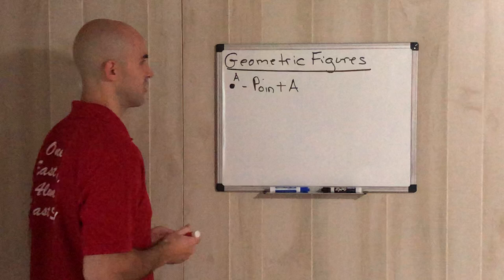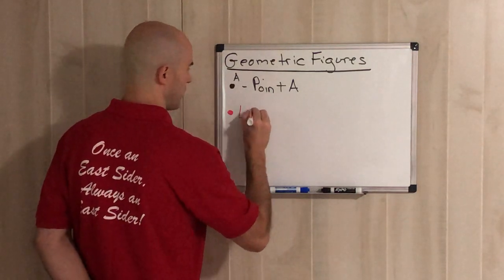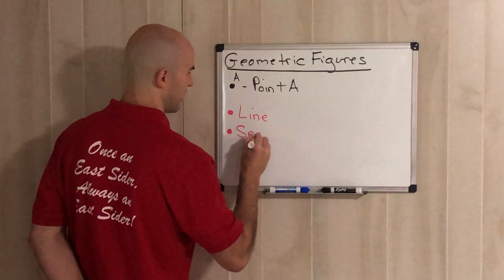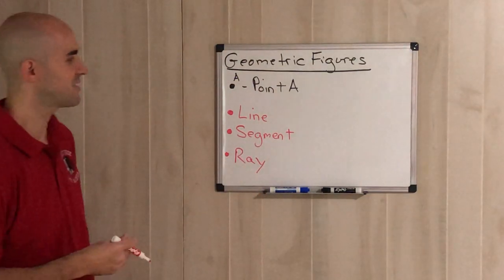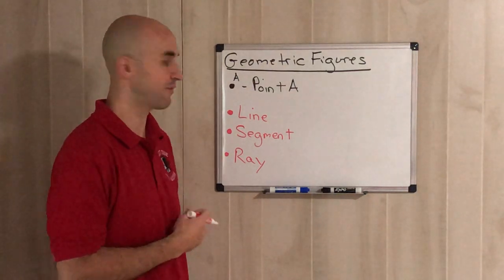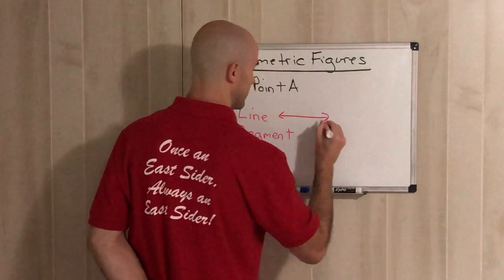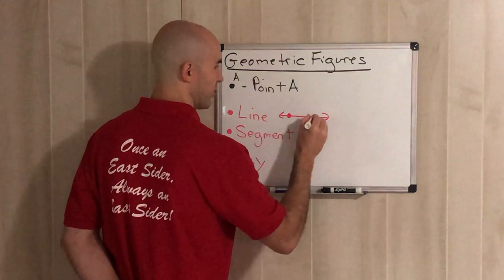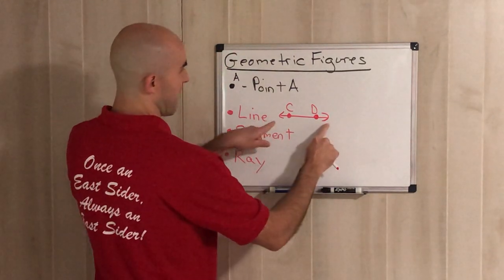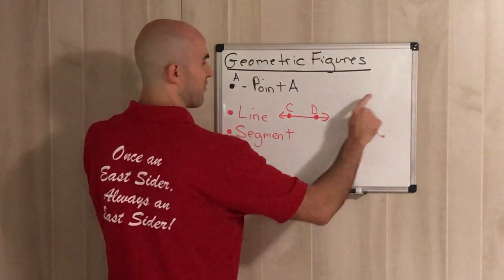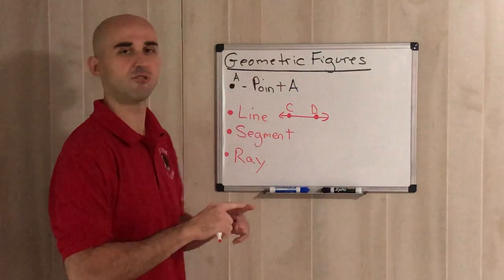We have a point, but then we have three other terms that are significant: a line, a segment, and a ray. You may have heard of these before. They are all completely different and it's important to know the differences. A line is always something that never ends. It has two points we usually focus on — we'll call them C and D. Since it never ends, that's why we have two arrows, because it goes on forever in both directions.